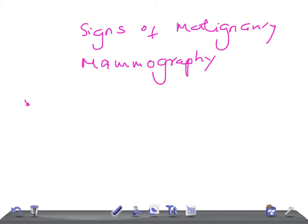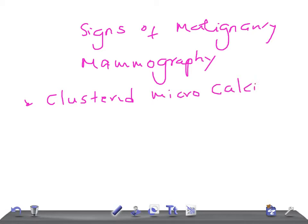The most important sign is clustered microcalcification. Go ahead and Google the images, guys — clustered microcalcifications. So this microcalcification involves more than five particles in one cubic centimeter of area.